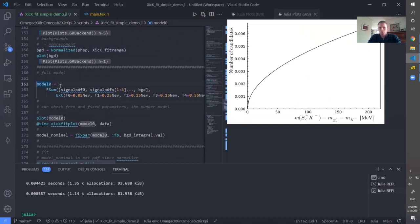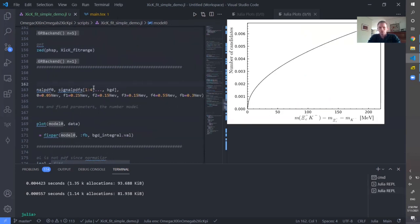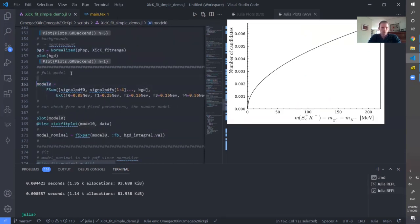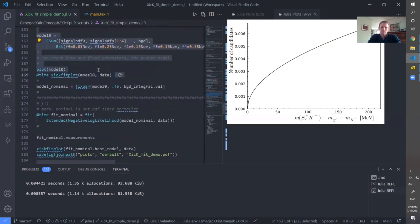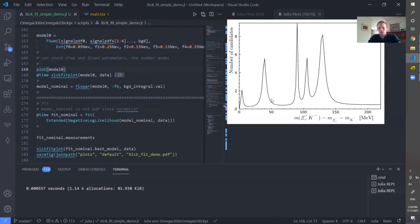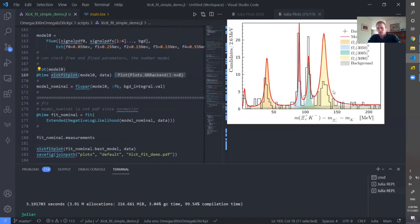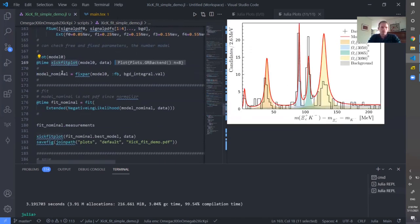The last component is a background needed for this fit. The model is a sum of all components with the coefficients to be adjusted in the fit. And I can plot the model to see that it indeed has six components, one background and five peaks. And I created the recipe so that we see separate components.